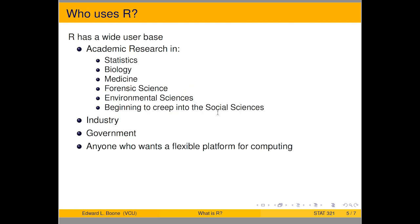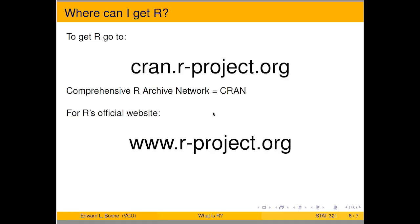Who uses R? R has a very wide user base. In academic research it's used in statistics — where it was developed — as well as biology, medicine, forensic science, and environmental sciences. It's beginning to creep into the social sciences as well. It's widely used in industry and government, and basically by anyone who wants a flexible platform for computing.